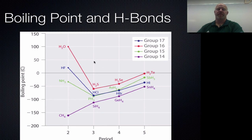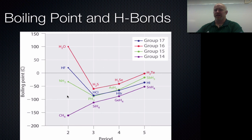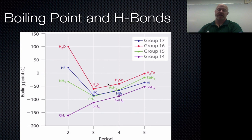If it wasn't for hydrogen bonding, water would have a boiling point somewhere between negative 50 and negative 100 degrees Celsius. So if it wasn't for hydrogen bonding, water would be a gas below room temperature. Water as vapor across our entire planet — we would definitely not be living here. Along with ammonia and hydrogen fluoride, we see massive differences in boiling point due to those hydrogen bonds.